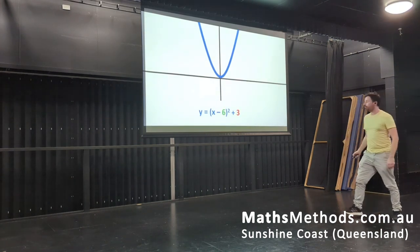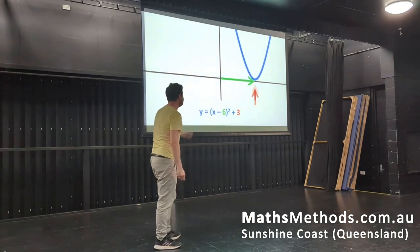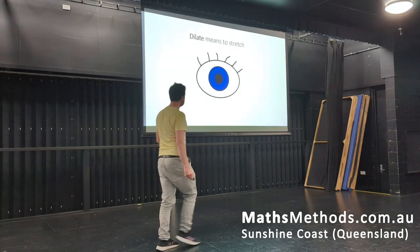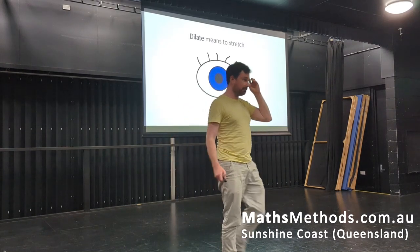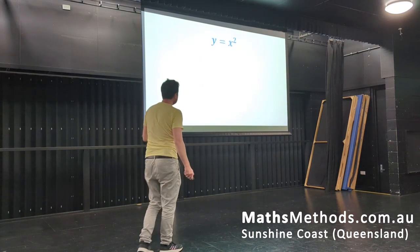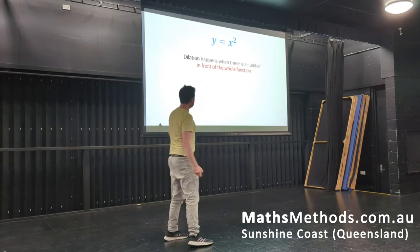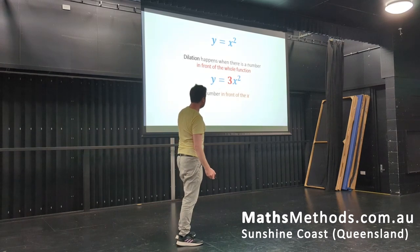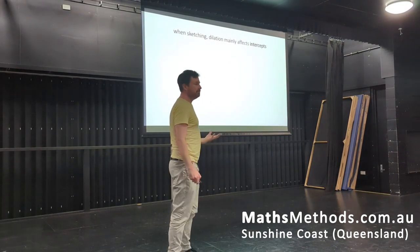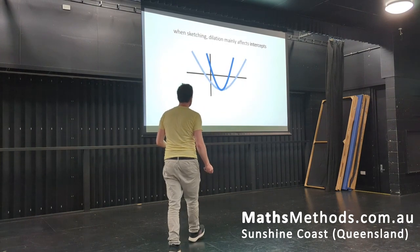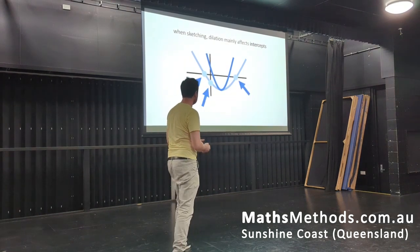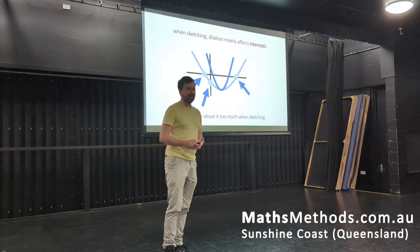So moving parabolas in full, you've got something like this — moving over by six, moving up by three, and there would be a turning point. Now, dilation — you're probably pretty familiar with that. It doesn't need to stretch. If you've ever seen a person's eyes dilate, it just means the black part becomes bigger. Dilation happens when there's a number in front of the whole graph, or if there's a number just in front of the x. But when sketching, dilation mainly just affects intercepts. So we don't worry about dilation too much when we sketch.